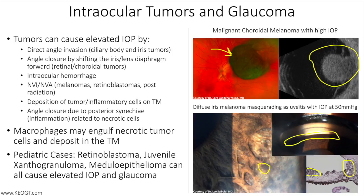There are several laser-based options for reduction of IOP, including non-invasive options like selective laser trabeculoplasty and transscleral cyclophotocoagulation, and invasive options like endocyclophotocoagulation. Transscleral cyclophotocoagulation is the primary method of treating IOP with co-existent intraocular tumors because of its non-invasive nature, ability to retreat, and lack of plausible tumor liberation compared to filtration surgery and other treatment modalities.